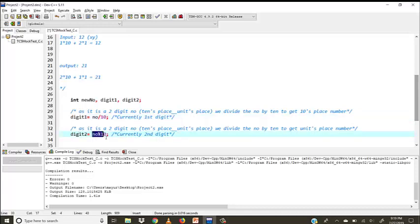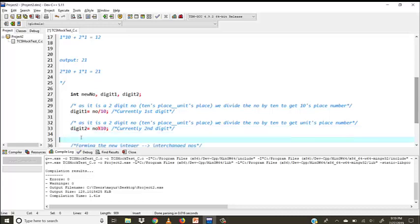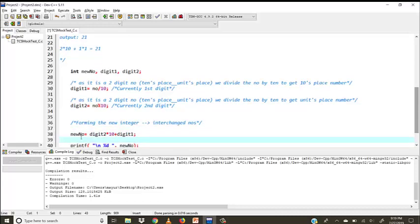For finding the units place value, we get a mod of the input number. So whatever is the remainder will be stored in digit2. Now to form the new integer, what we have to do is the units place number, we will take it at the tens place and multiply it by 10.